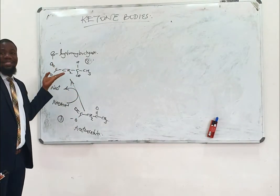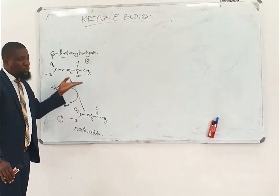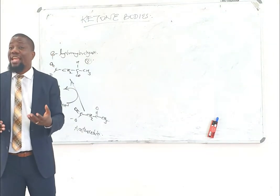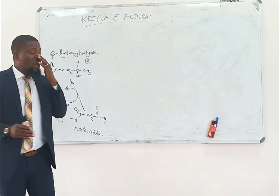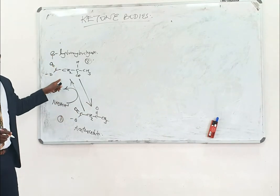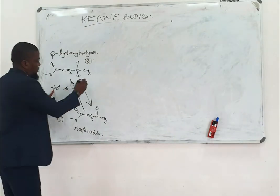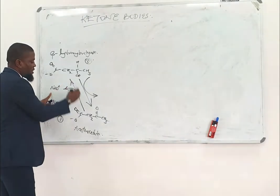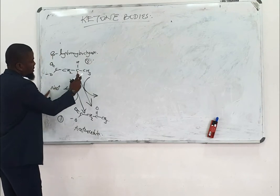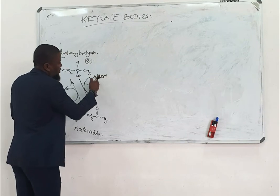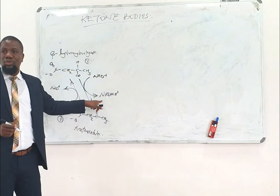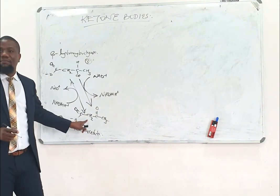Starting with beta-hydroxybutyrate: when the ketone bodies reach the peripheral tissue, where you would expect a lower amount of NADH, meaning there is a higher need for energy — after all, this vessel is in starvation — this ketone body is going to be oxidized back into acetoacetate. The reverse of this reaction is catalyzed by the same enzyme, and the hydrogen will be absorbed by NAD+, producing NADH + H+, which is used to produce 2.5 ATPs.